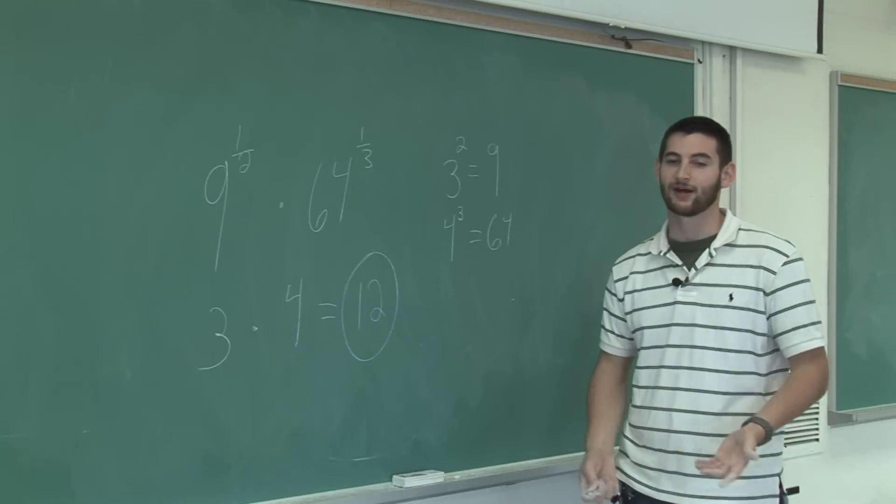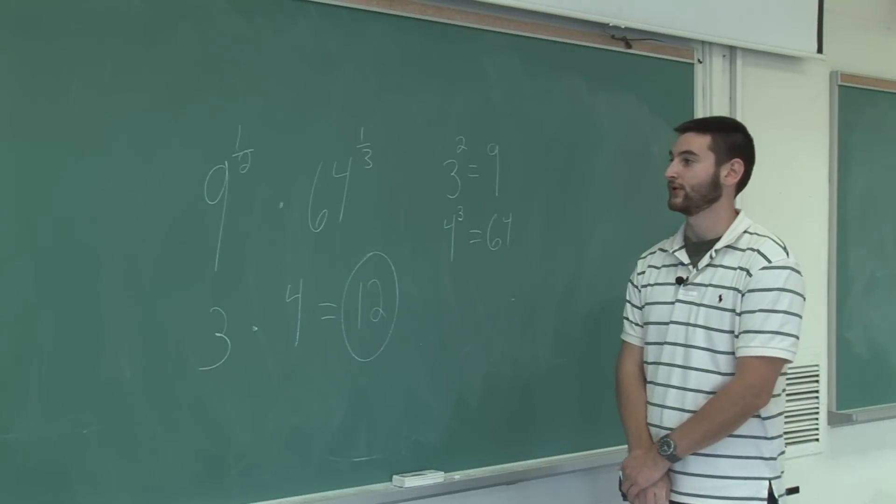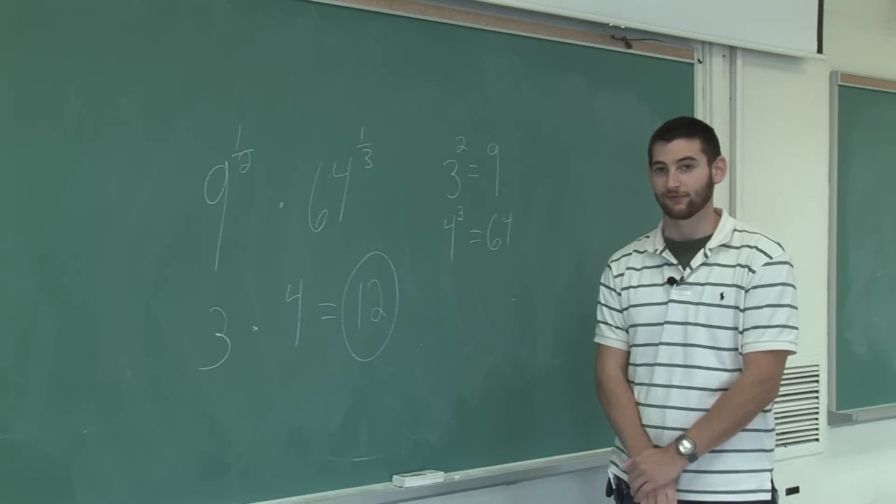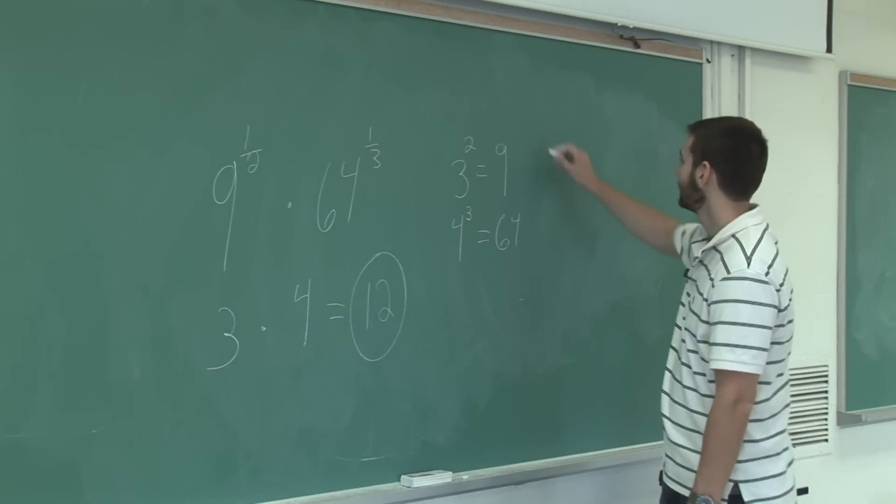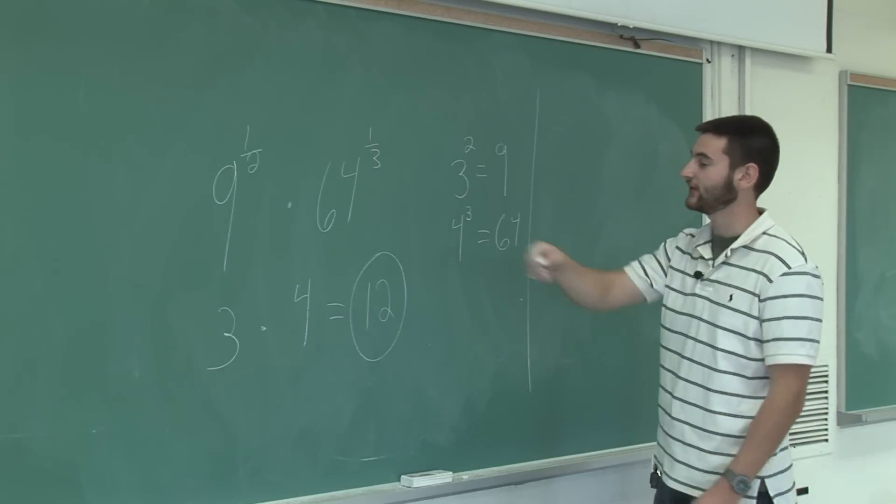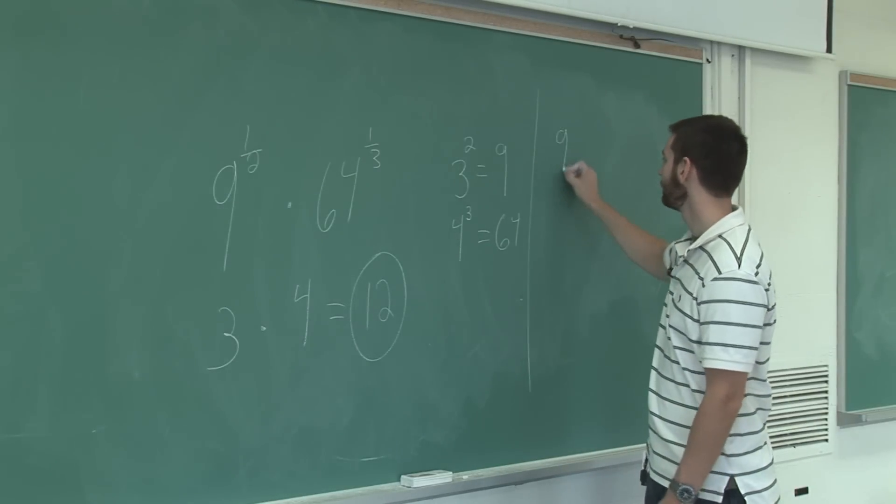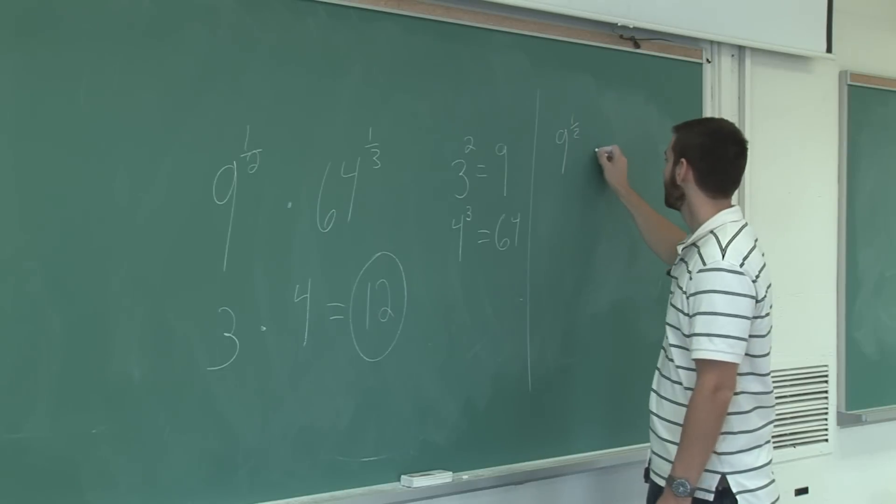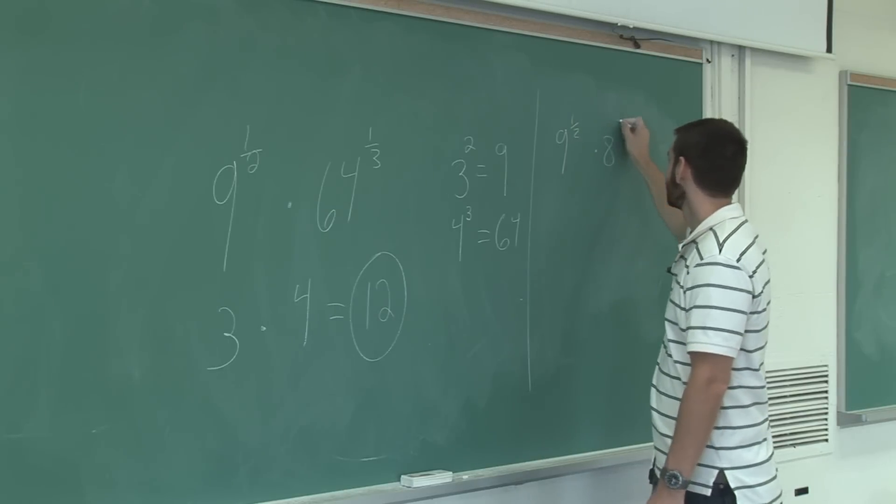Now I'm going to show you how to multiply numbers with fractional exponents with improper fractions. Let's take 9 to the 1 half and multiply that by 8 to the 3 half.